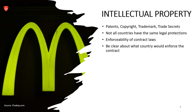A trademark is a sign capable of distinguishing the goods or services of one enterprise from those of another, and is protected by intellectual property rights. An example is the golden arches, which are a registered trademark of McDonald's, distinguishing their products and services from those of other fast food companies. The fourth component, trade secrets, is a formula, practice, process, design, instrument, pattern, or compilation of information which is not generally known, by which a business can obtain an economic advantage over competitors. An example is the recipe for Coca-Cola, one of the most famous trade secrets, known by only a few people within the organization.